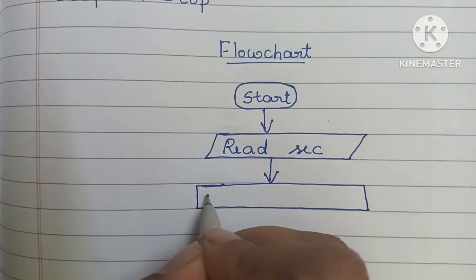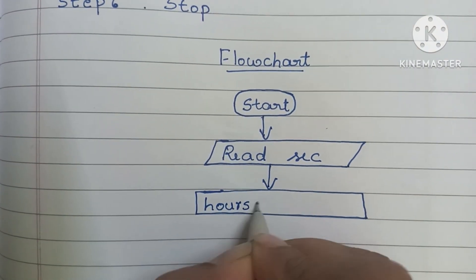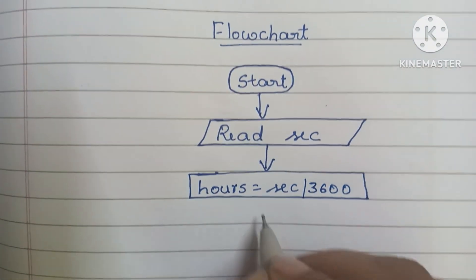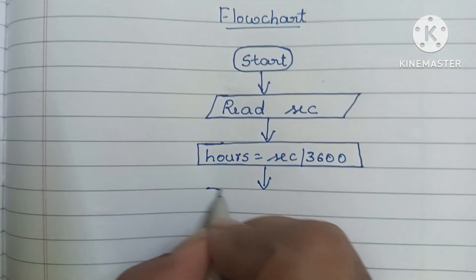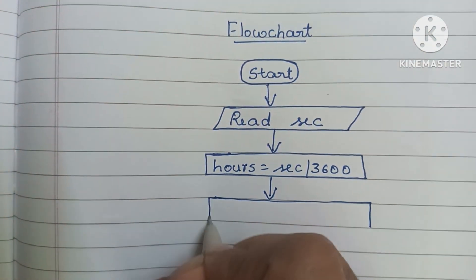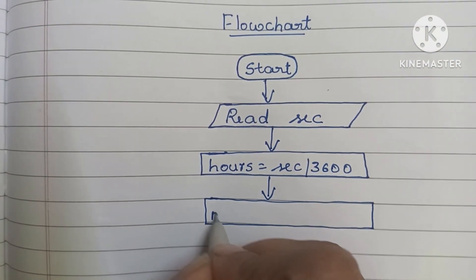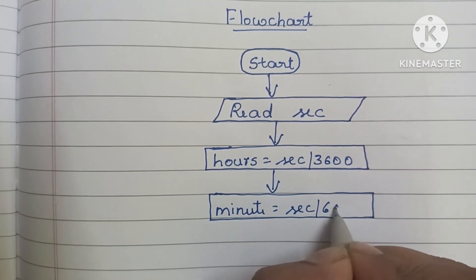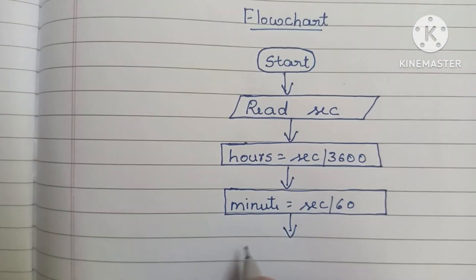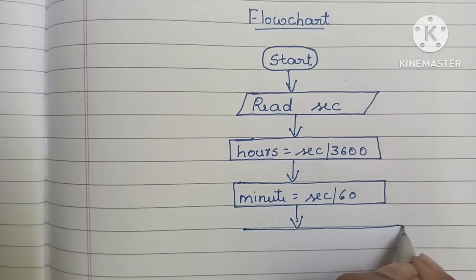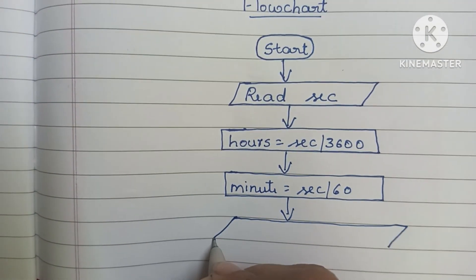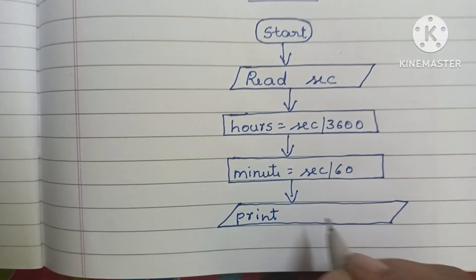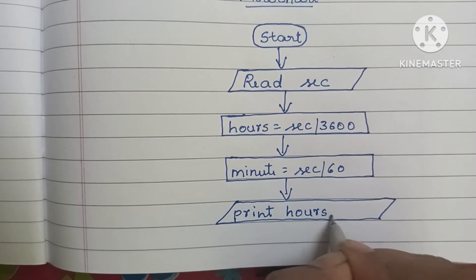Next, we start the calculation. Calculations are done within a rectangular shape. Inside the rectangle, write the formula: Hours = Seconds / 3600. Next, to find minutes, also written within a rectangular shape: Minutes = Seconds / 60. Then the output values are written within a parallelogram shape: Print Hours, Minutes.